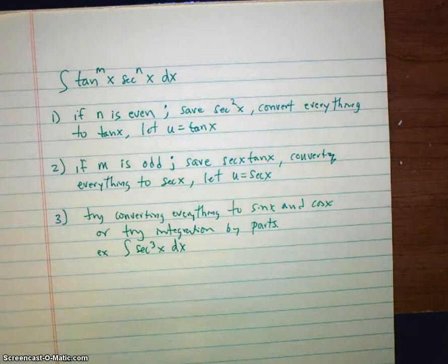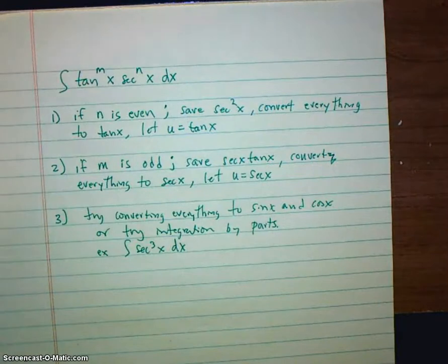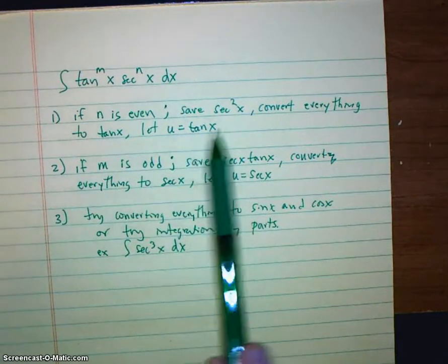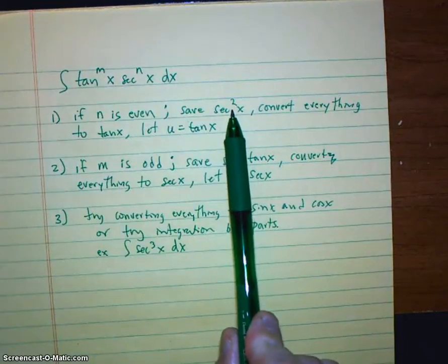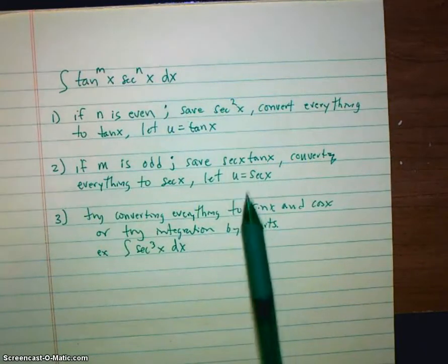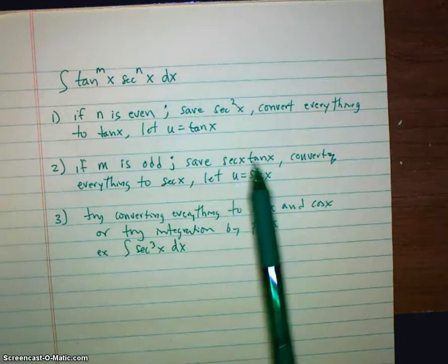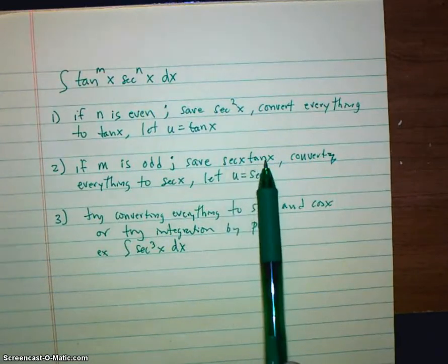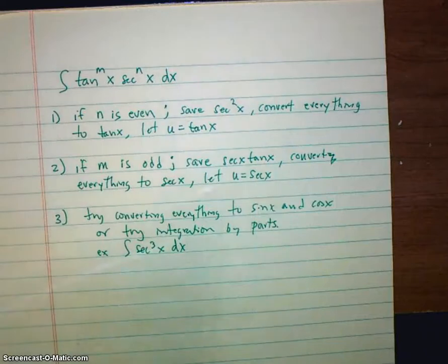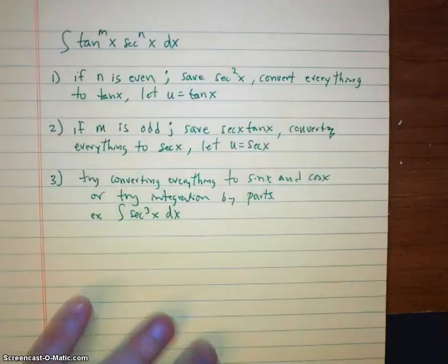So these rules are a little bit more complicated than the rules for sines and cosines. But the way to remember it is what you want your u's to be. If I want u to be tangent, then I need a secant squared. So you're looking for even secants. Or, if I want u to be secant, I'm looking for the derivative to be a secant tangent. So I want odd tangents. All right. Let me grab a couple problems out of the book here. And see what we have.